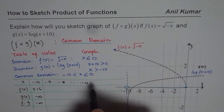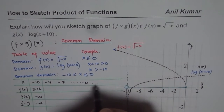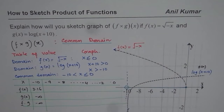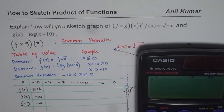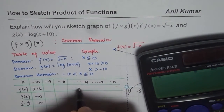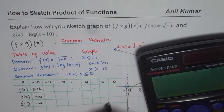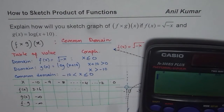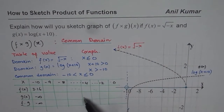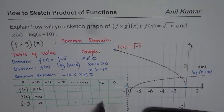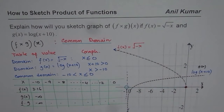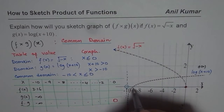Minus 4 is a good value because square root of 4 is 2. We will also take minus 2 and 0. Two values are very prominent: when x equals 0, the product is 0 since f of 0 equals 0. And at x equals minus 9, g of x equals log of minus 9 plus 10, which is log of 1, which equals 0. So we have two zeros in our product function.